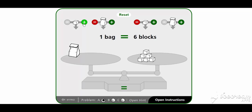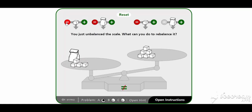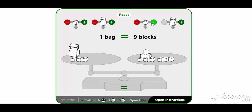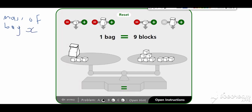We're going to add back the blocks and model this algebraically. Bear in mind we started knowing each block has a mass of one kilogram, but we did not know the mass of the bug. In math, when something is not known it can be represented by a variable — an unknown. So let the mass of the bug be x. We call it x because we don't know what it is.